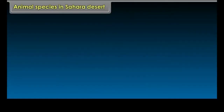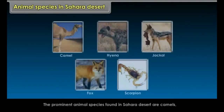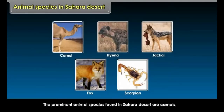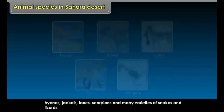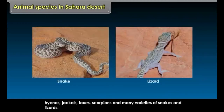Animal Species in Sahara Desert. The prominent animal species found in the Sahara Desert are camels, hyenas, jackals, foxes, scorpions, and many varieties of snakes and lizards.